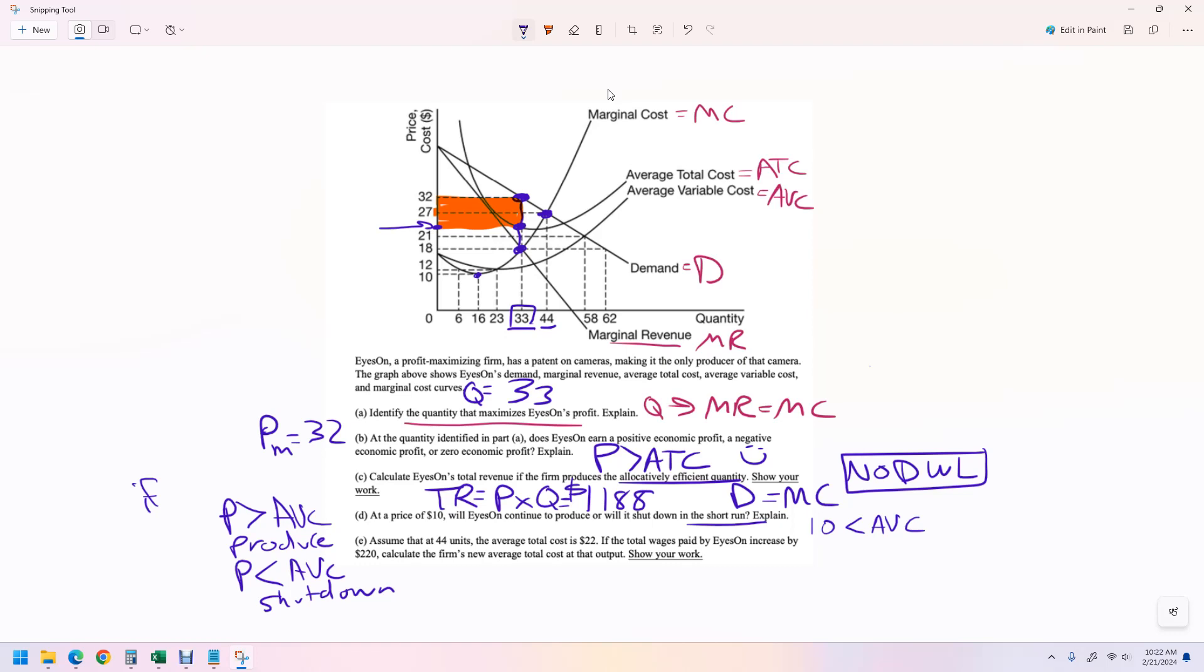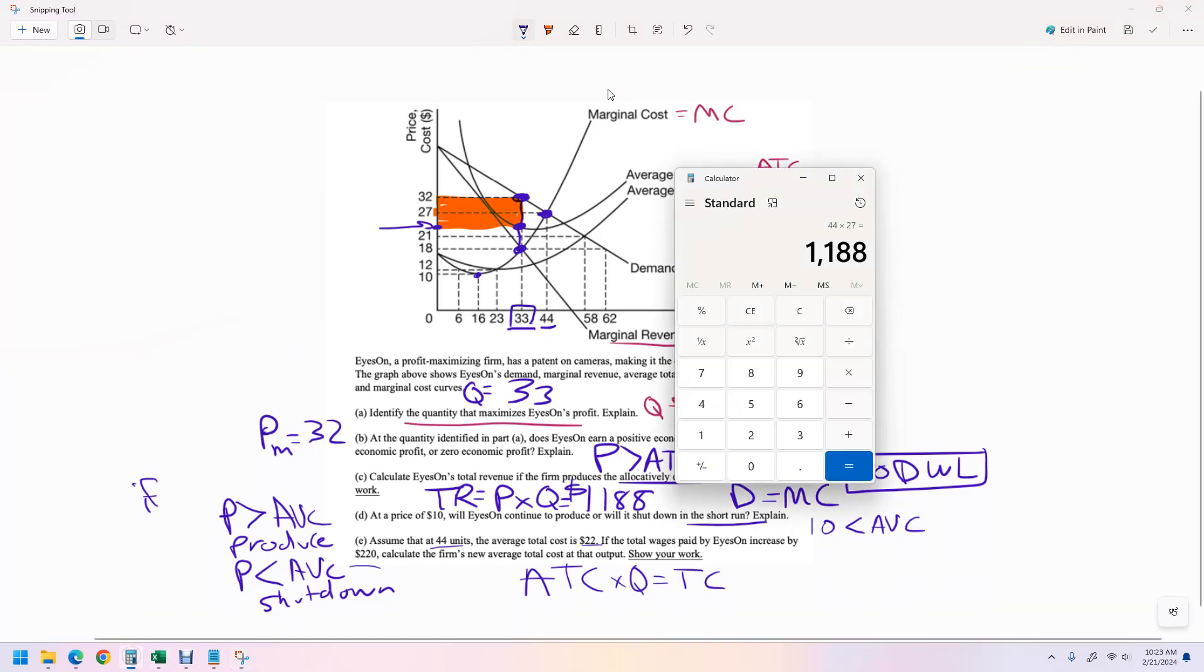Assume that at 44 units, the average total cost is 22. If the total wages paid by Eyes On increase by 220, calculate the firm's new average total cost at that output. What we can do is multiply 44 times 22, because average total cost times the quantity that you produce gives you the total cost. And then we can just add 220 because they're saying the total wages.